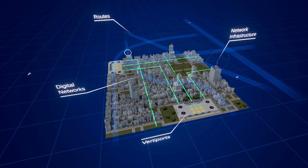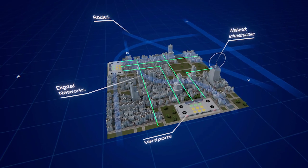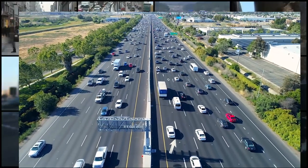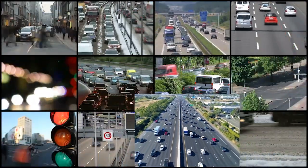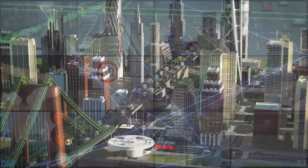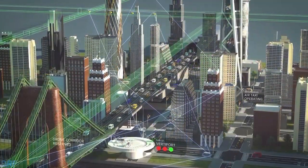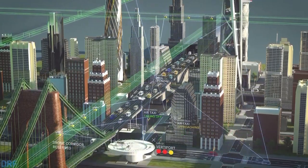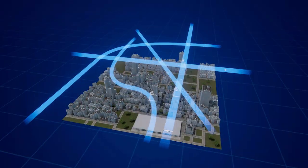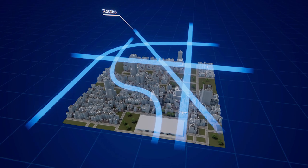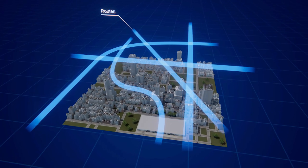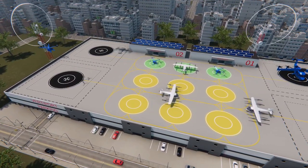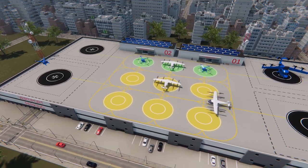One area the NASA team is researching is infrastructure. When we typically think of infrastructure, we think of roads and highways. Now take that concept and apply it to the air above us. You can imagine these new vehicles traversing across a network of routes, which would enable landing at vertiports that may be located at airports, but also in our city centers.